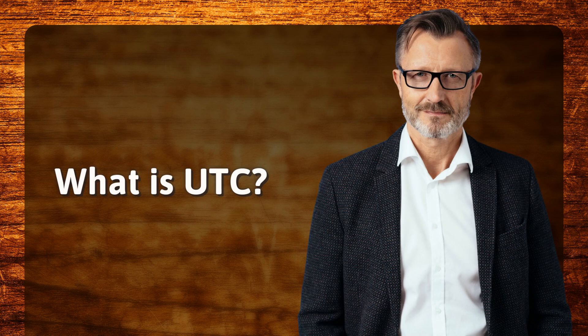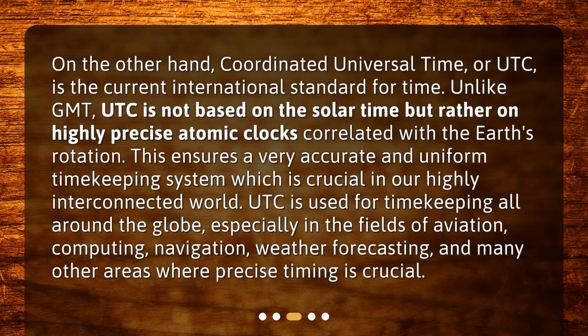Coordinated Universal Time, or UTC, is the current international standard for time. Unlike GMT, UTC is not based on solar time but rather on highly precise atomic clocks correlated with the Earth's rotation. This ensures a very accurate and uniform timekeeping system, which is crucial in our highly interconnected world. UTC is used for timekeeping all around the globe, especially in the fields of aviation, computing, navigation, weather forecasting, and many other areas where precise timing is crucial.